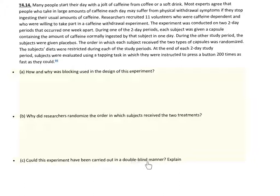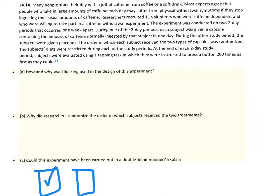Part C: Could this experiment have been carried out in a double-blind manner? Absolutely. In a double-blind study, the person receiving the treatment doesn't know which treatment they're getting, and the person administering it also doesn't know. This could be achieved with a third party involved — someone who randomly places caffeine and placebo capsules into containers without telling the experimenter which is which. The experimenter then gives the two treatments to participants without knowing which is which. That would constitute a double-blind experiment.